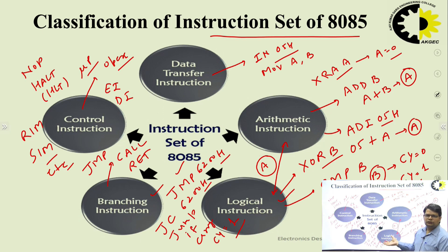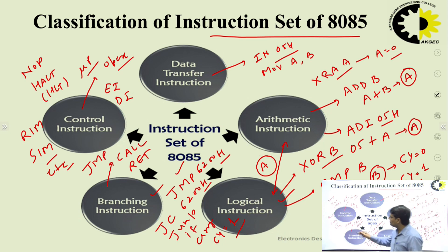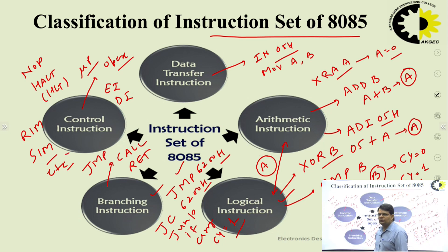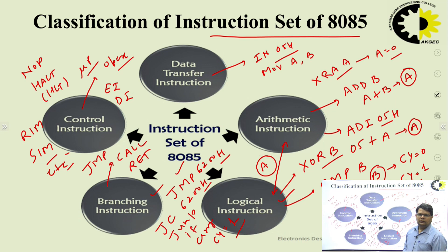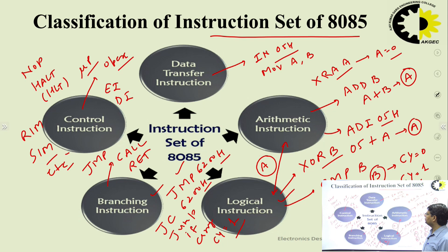Fifth is control instructions. These control the execution or microprocessor operation. Examples include NOP (no operation), HLT (halt), EI (enable interrupt), DI (disable interrupt), and RIM and SIM instructions. NOP is generally used for providing delay. HLT stops the program execution — after that, no instruction is executed. RIM and SIM instructions are used for serial input data and serial output data transfer for serial communication.